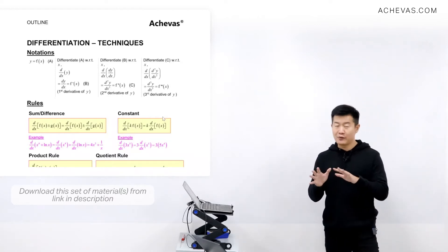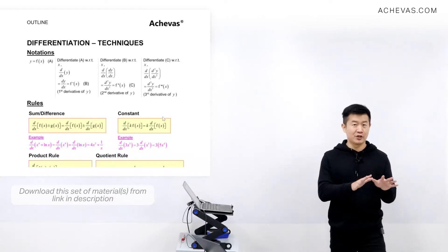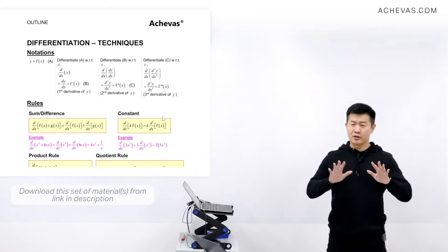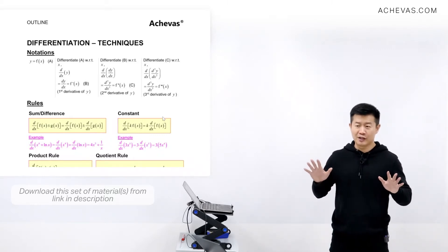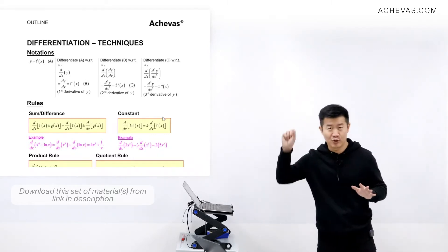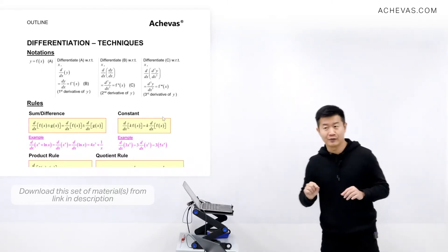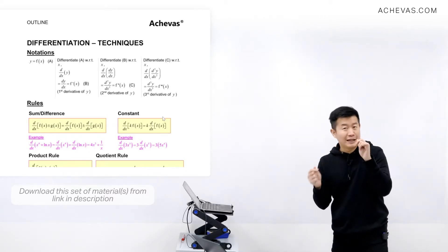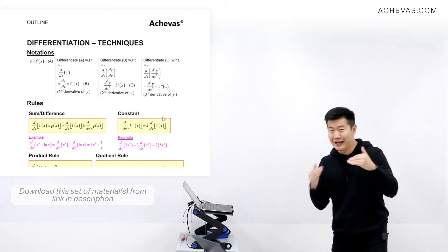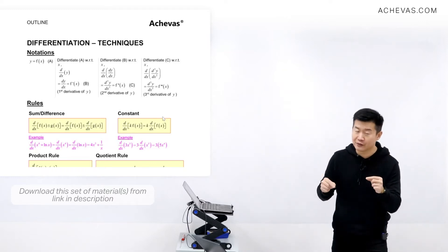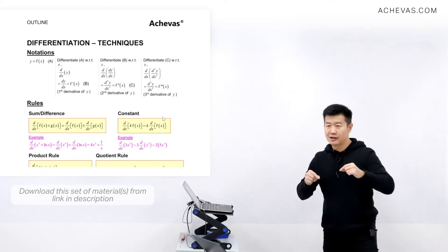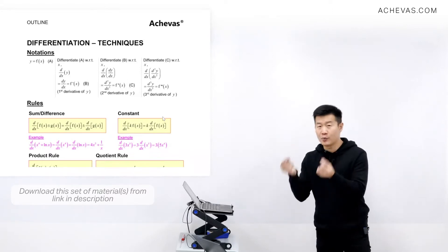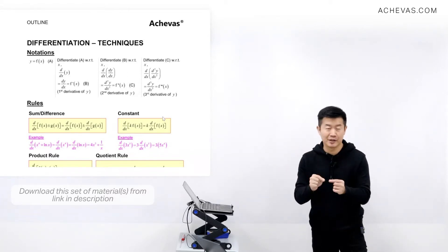Which means that if we have already learned differentiation, we will no longer need to go and try to plot a graph, then use a ruler to try to draw a line that is going to be tangent to the graph, then find the gradient of this line, and from this gradient, we will be able to deduce the gradient of the original graph at a particular point.